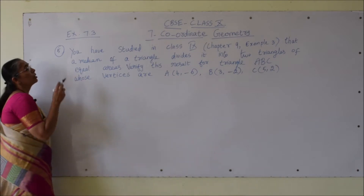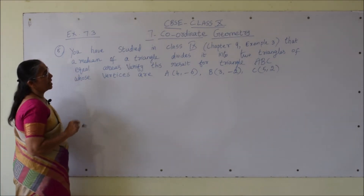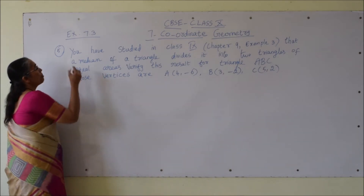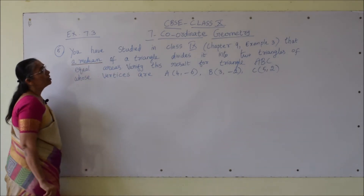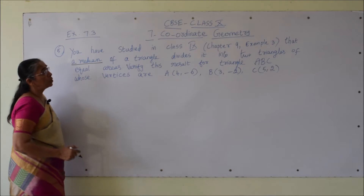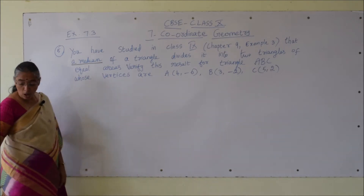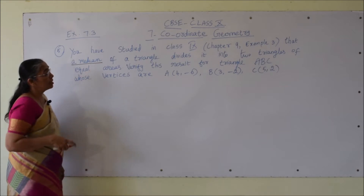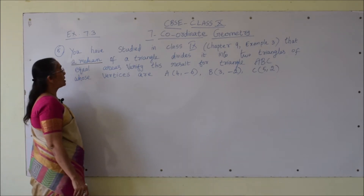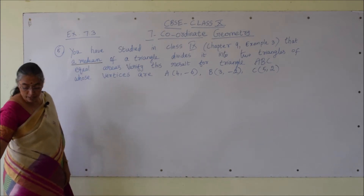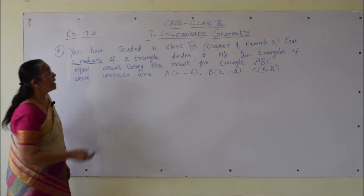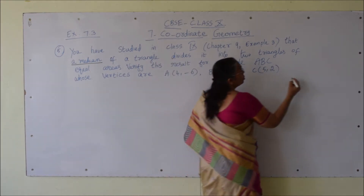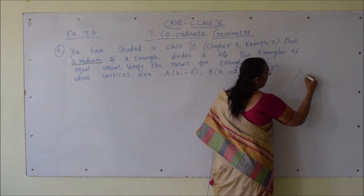Fifth problem. We have studied in class 9, chapter 9 example 3, that a median of a triangle divides it into 2 triangles of equal areas. We need to verify this result for triangle ABC whose vertices are given. So, a median of a triangle divides the triangle into 2 triangles of equal areas.